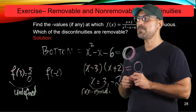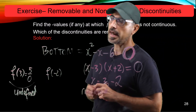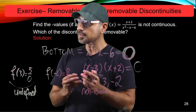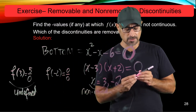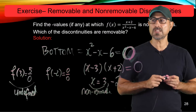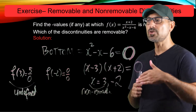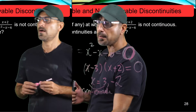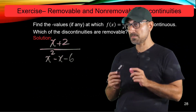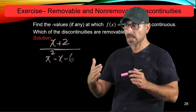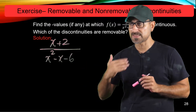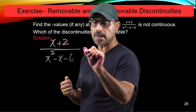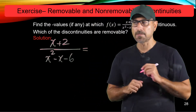How about x equals negative 2? That gives a 0 over 0 indeterminate form, which is undefined. But when we have a 0 over 0 indeterminate form, we always try to use algebra to simplify the function. At x equals negative 2, the top and bottom become 0 simultaneously.